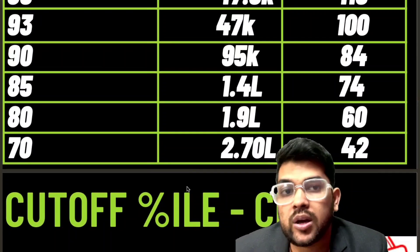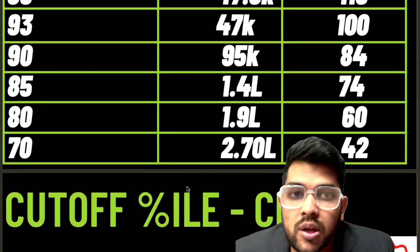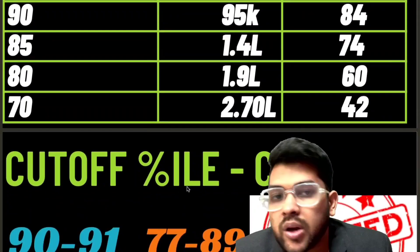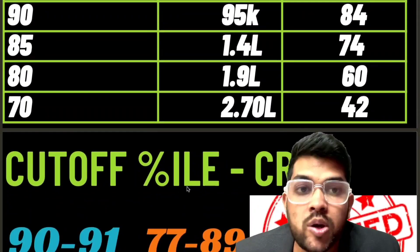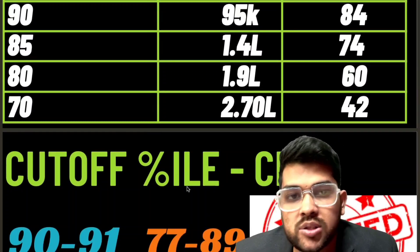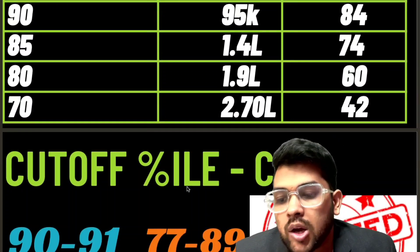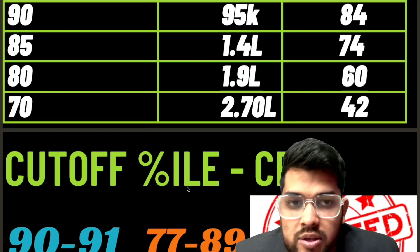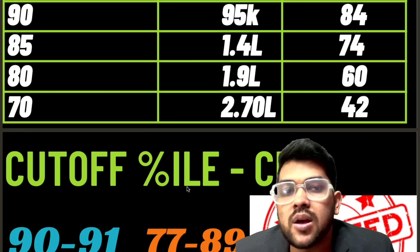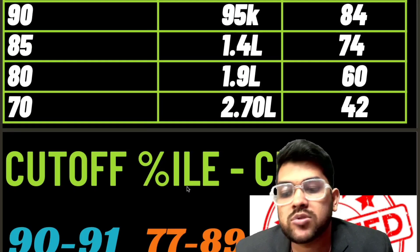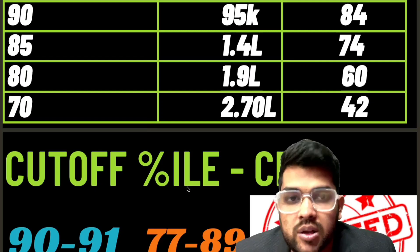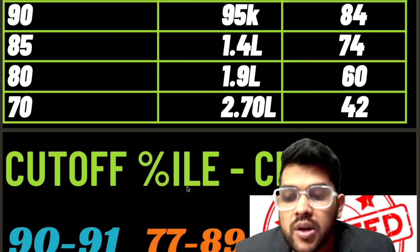For the JEE Advanced cutoff — that is the qualifying percentile for general category (not EWS; I have a separate video for EWS) — 90 to 91 percentile will be the cutoff. The mark requirement will be 77 to 89 depending on the paper difficulty. If the paper is hard it will be around 75 to 78; if easy it can be 85 to 90; for a moderate paper expect around 83 to 84 marks.